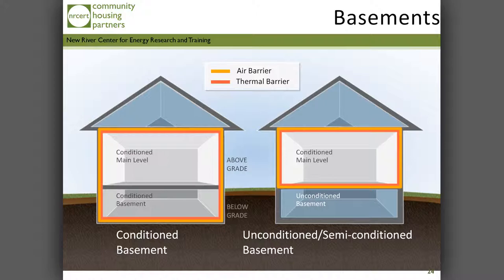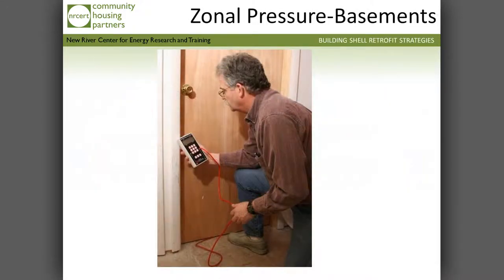Zero — because that's inside. On the right side, 50. This could be a garage or a basement. This is how we would do the zonal pressure test across a door.